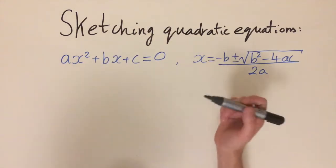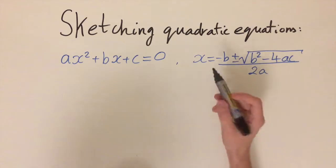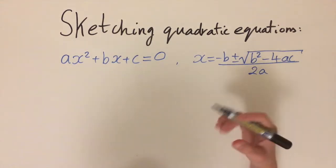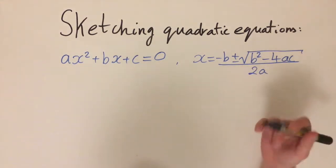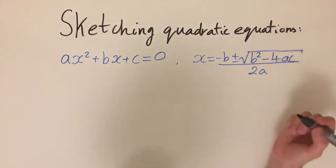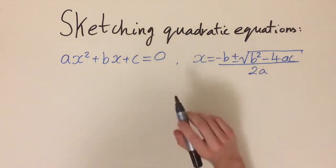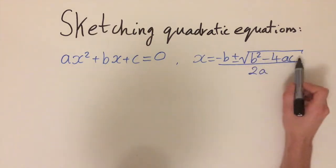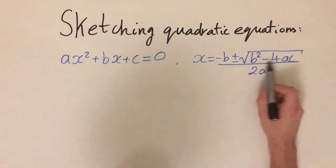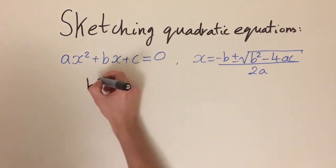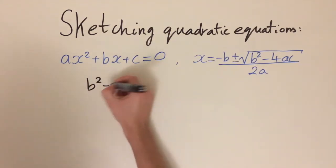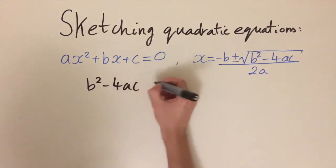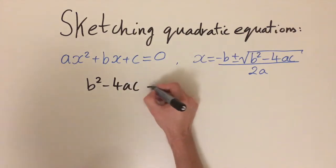The solutions correspond to the graph crossing the x-axis, so knowing what the solutions are tells us a lot about what the graph is going to look like. I want to draw attention to the part under the square root — this is called the discriminant. It's quite important: b squared minus 4ac.